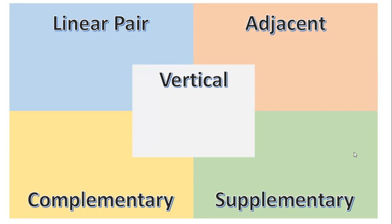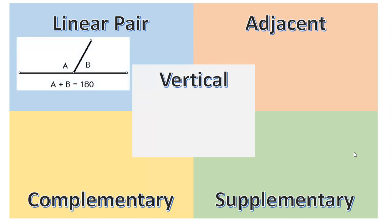The first one is called linear pair. They are a pair of angles that would make a line — that's why they're called linear pair. The relationship for them is that they add up to 180 degrees. So angle A plus angle B would be 180 degrees. If angle A happened to be 100, angle B would be 80 degrees. As long as they add up to 180, that's the relationship.